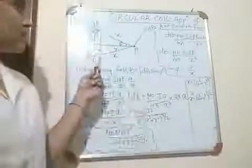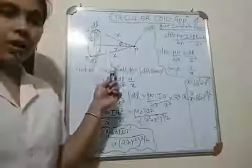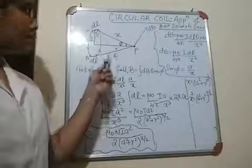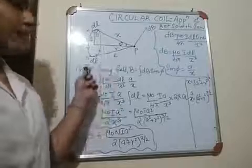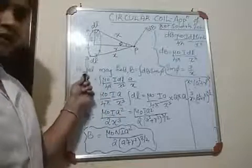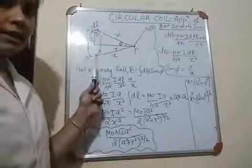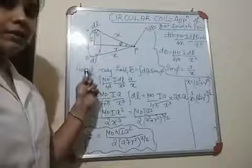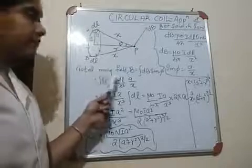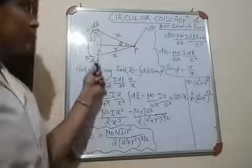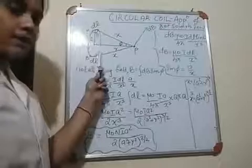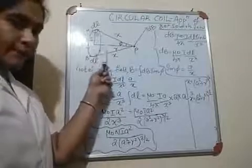For that, consider a circular coil as shown here. This coil carries a current I, so it's a current-carrying conductor. It behaves like a magnet. The radius of this coil is small a.